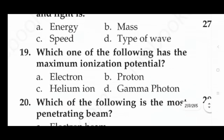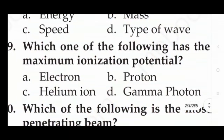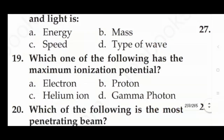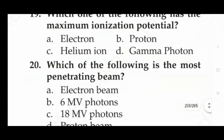Next question: which one of the following has the maximum ionization potential — option A: electron, option B: proton, option C: helium ion, option D: gamma photon. The answer is option C, that is helium ion.